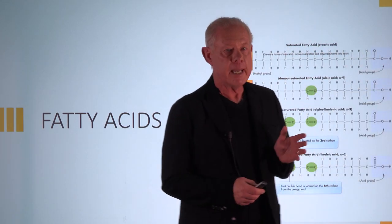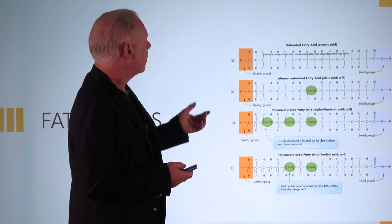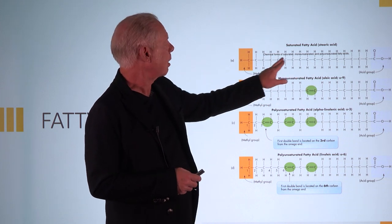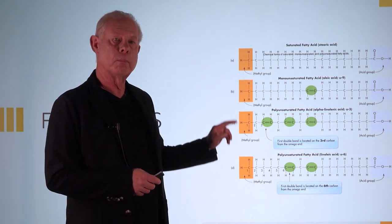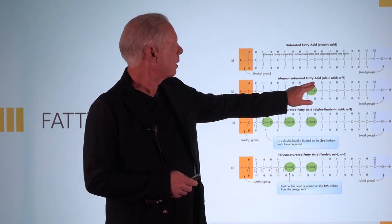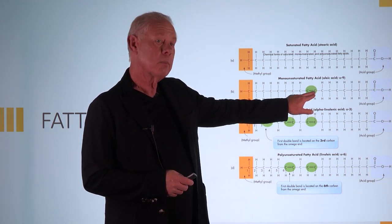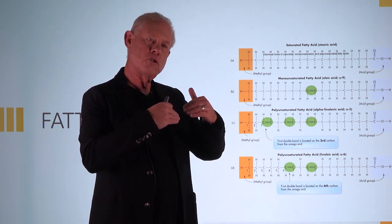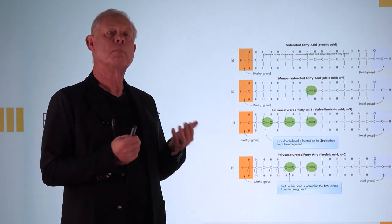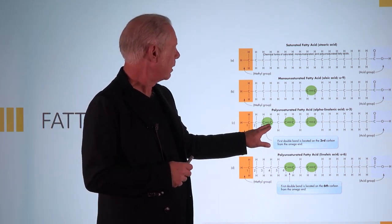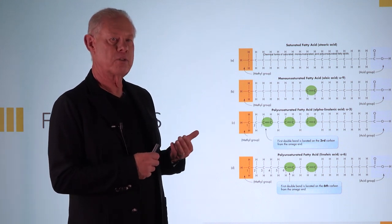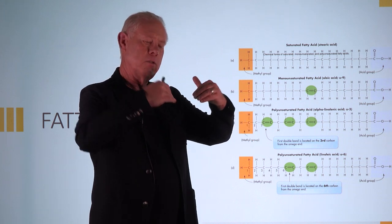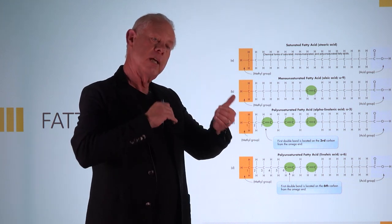The omegas are a fatty acid. You have monounsaturated fatty acids with one bond compared to your saturated fatty acid, which is nothing but carbons, single bonds, and hydrogens. The mono eliminates a couple of the hydrogens, making a double bond between the carbons, which changes the shape slightly. Then you have poly — poly meaning many — so we have more than one double bond, in this case three, making a very unique three-dimensional shape.